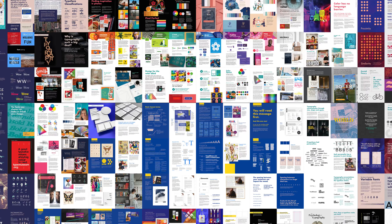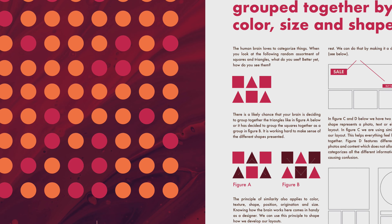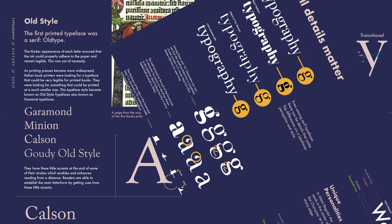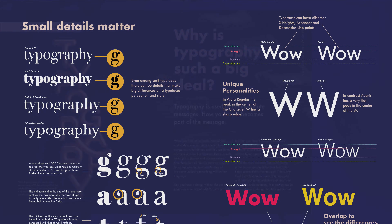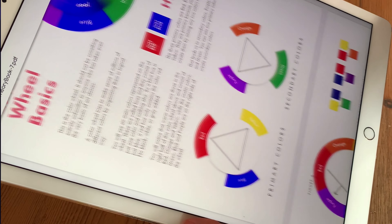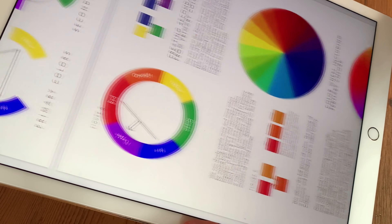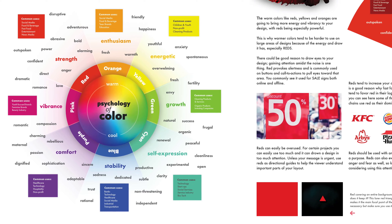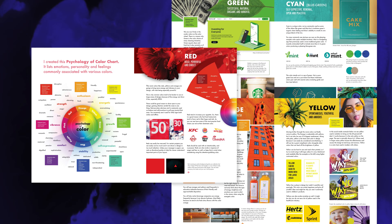This guide will cover major foundations of design theory including Gestalt theory, Gestalt examples, typography introduction, the history of typography, anatomy of typography, font pairing, psychology of typography, color theory introduction, color wheel basics, color harmony, palettes, how to create a palette, psychology of color, color accessibility, and color spaces.